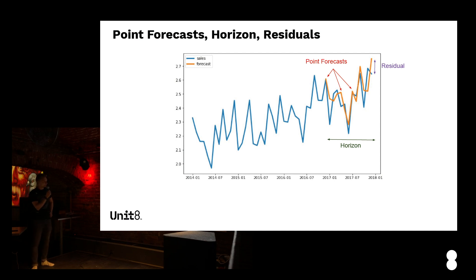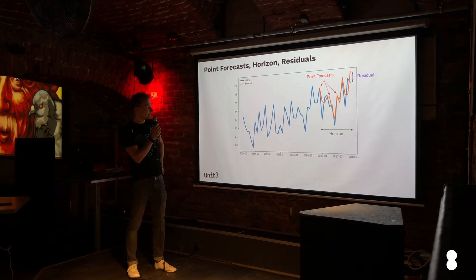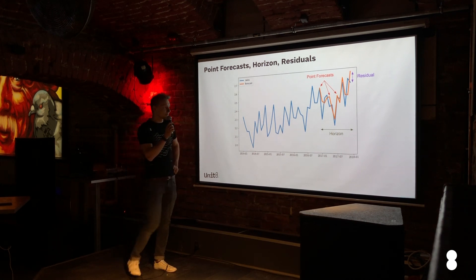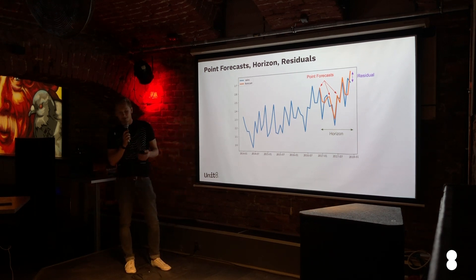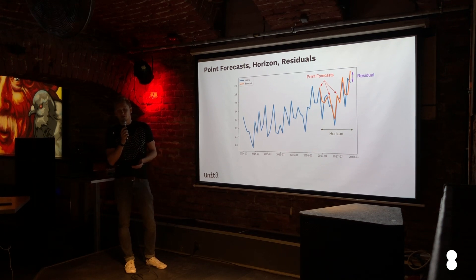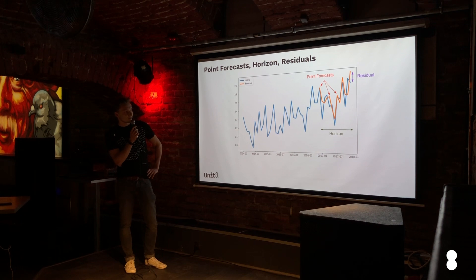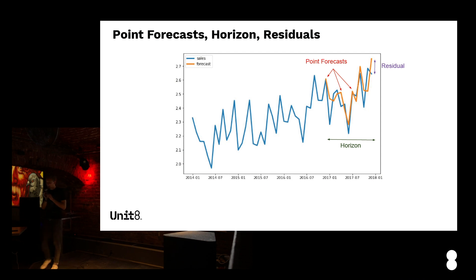When we speak about time series forecasting, let's focus on the graph. In blue, we have some time series — some sales values — and in orange we have the forecast. When we speak about the forecast, we can speak about a point forecast: we predict the next element, the second next element, et cetera. These are called point forecasts. We can also speak about the horizon of the forecast — whether we predict only the next value or three or six values in advance.